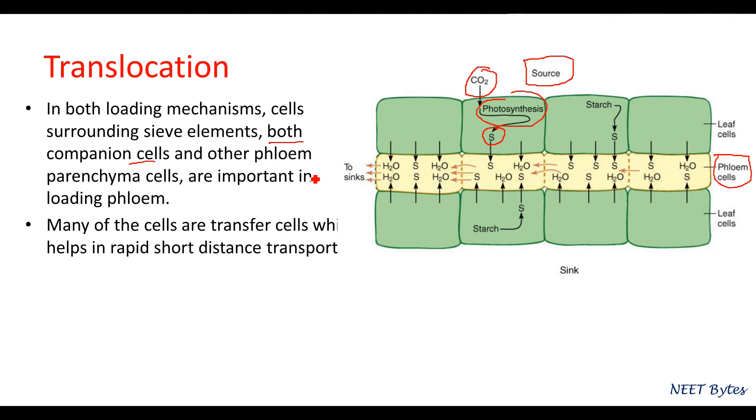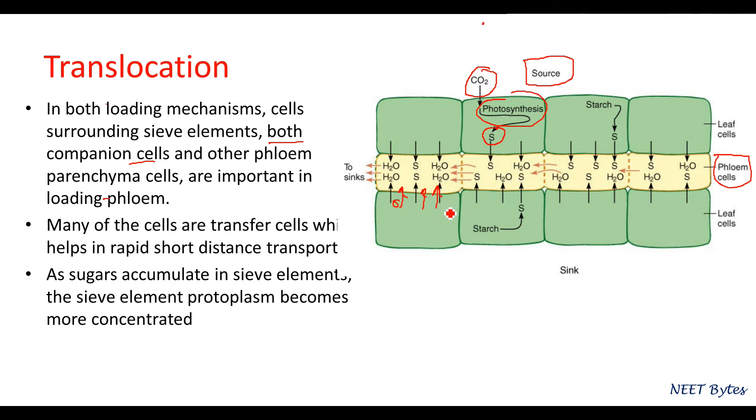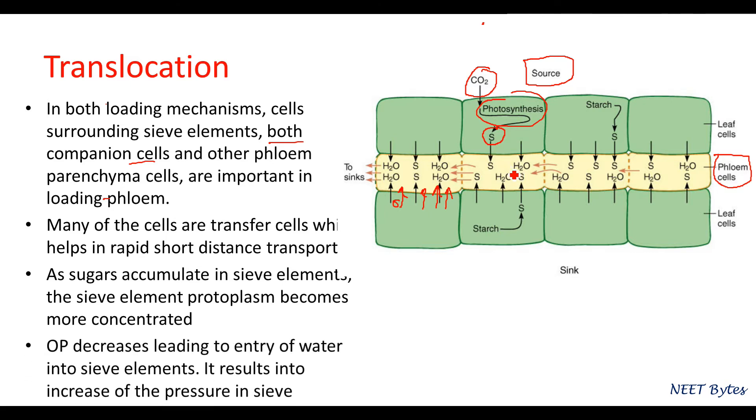Many of these cells are transfer cells which help in rapid short-distance transport. As sugar accumulates in sieve elements, the protoplasm becomes more concentrated. Once the protoplasm becomes concentrated, H2O starts flowing just to balance the concentration.